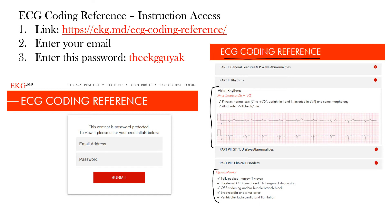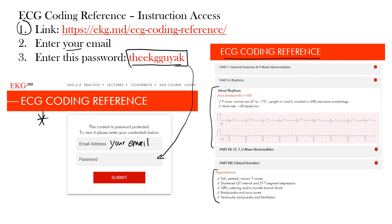To get access, go to the link provided, enter your email, and use the password 'ekgguyak' — no spaces, no capital letters. Click submit, confirm your email, and you'll have access. You can use this reference on your phone or computer while reviewing EKGs.